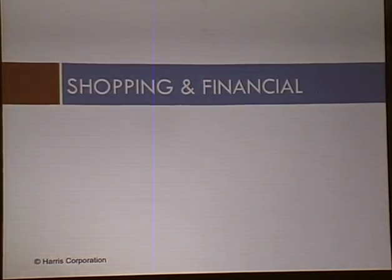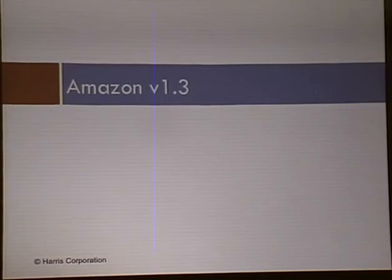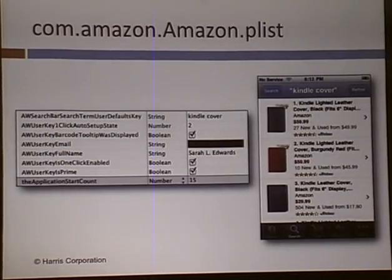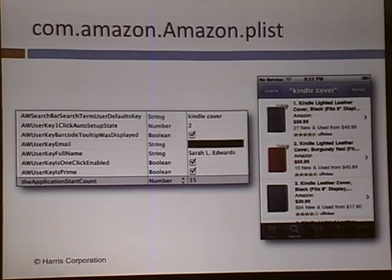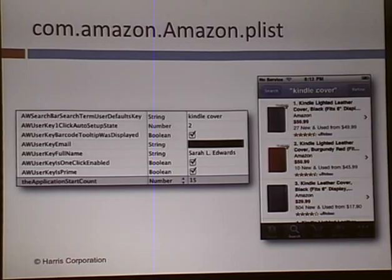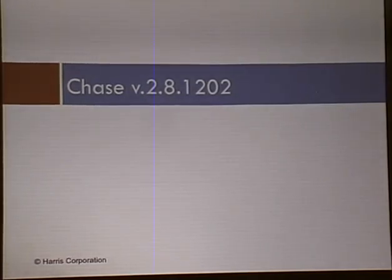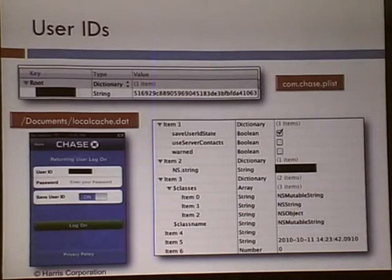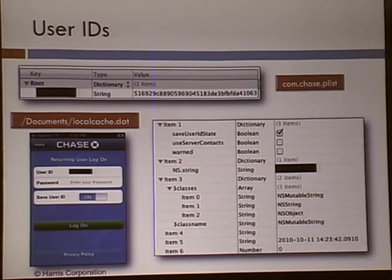I looked at some shopping and financial apps. Amazon was nice enough to keep the email unencrypted — it's just the email, not a password, but you can use that for good information. You can also see how many times the application was started and the last search terms. Chase app — via Forensics pretty much covered this — but they do keep the username in unencrypted format, and there's a field I believe is the last login for the user.